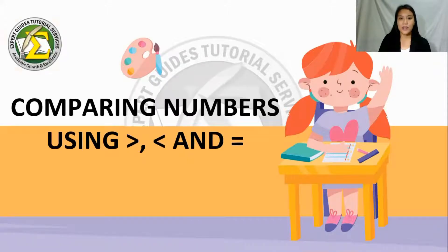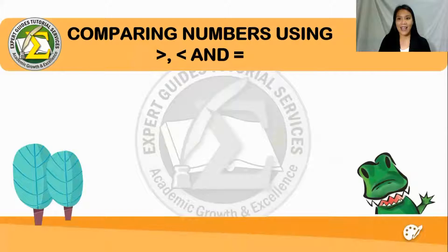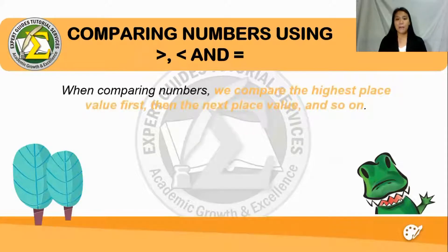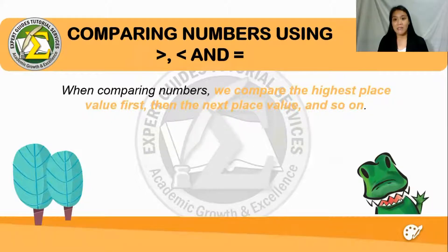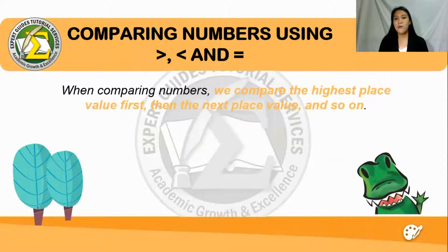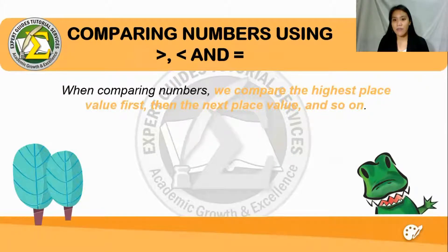So let's move on. Say hi to our alligator friend here — that will help us understand the symbols. When we compare numbers, we compare the highest place value first, then the next place value, and so on. Remember that we always consider the place value starting from the highest.